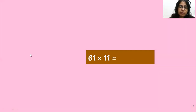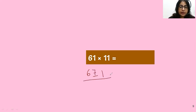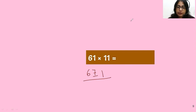Test yourself. Next: 61 into 11. Let me solve it — you can all work it out in your mind while watching. First is six, give the space, last is one, then six plus one is seven. So six, seven, one is the answer. Amazing magic — this is the magic!